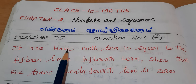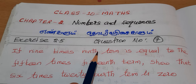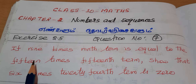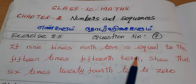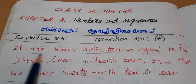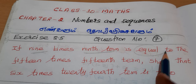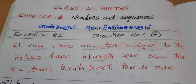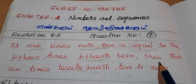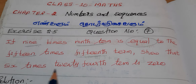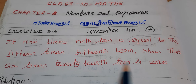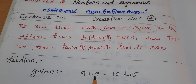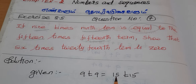If 9 times the 9th term is equal to 15 times the 15th term, then prove that 6 times the 24th term is 0.